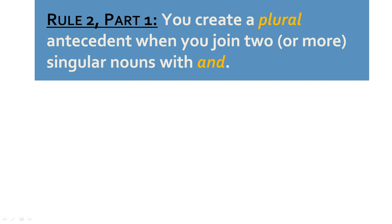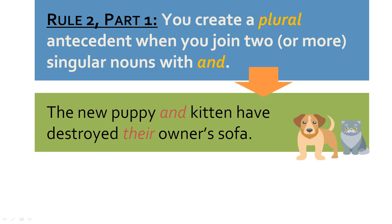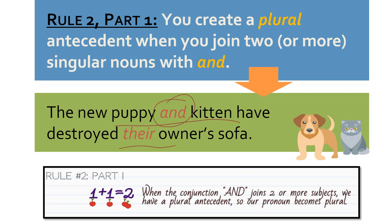Rule number two, part one: you create a plural antecedent when you join two or more singular nouns with 'and.' For example, 'the new puppy and the kitten' — with the joining word 'and,' you have a plural subject and need a plural pronoun. When that conjunctive 'and' joins two or more subjects, we've got a plural antecedent, so our pronoun becomes plural. When this one is two.